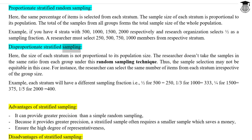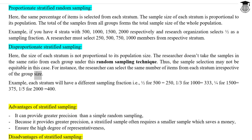Disproportionate Stratified Sampling. Here, the size of each stratum is not proportional to its population size. The researcher doesn't take samples in the same ratio from each group under this random sampling technique. Thus, the sample selection may not be equitable in this case. For instance, the researcher can select the same number of items from each stratum irrespective of the group size.